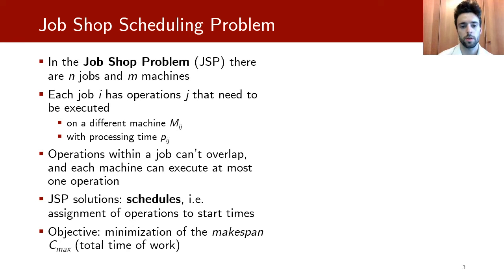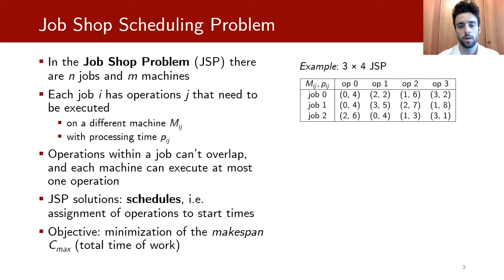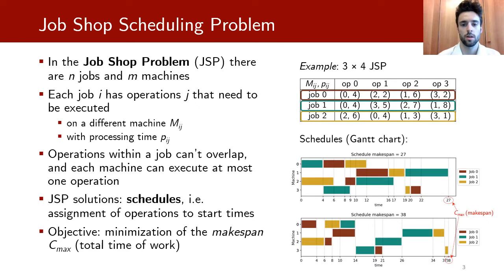The solution of the JSP is called the schedule, that is the assignment of operations to start times. The objective of the JSP is to find the schedule that minimizes the total time of work, also called makespan. Here you can see an example of the 3x4 JSP, that is with 3 jobs and 4 machines, and two possible solutions displayed with Gantt charts.